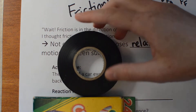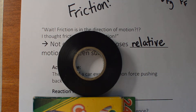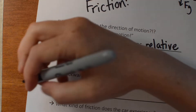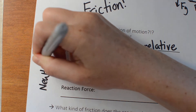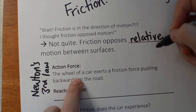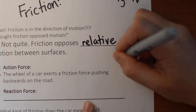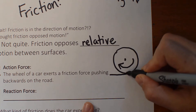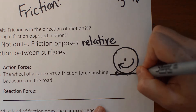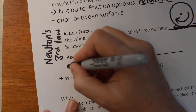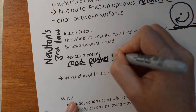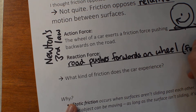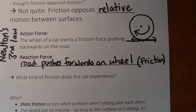The road says it's not taking any of that and pushes back on the wheel. That's Newton's third law: if the wheel is pushing backwards on the road, the road pushes forwards on the wheel. The wheel pushes back on the road — that's the action force. The road pushes forwards on the wheel — that is the friction force. That is why your wheel actually moves forwards.